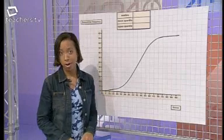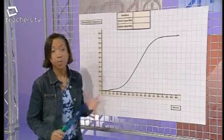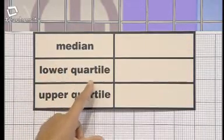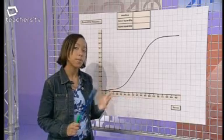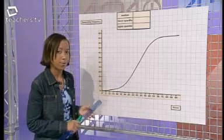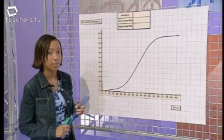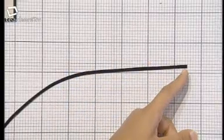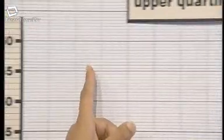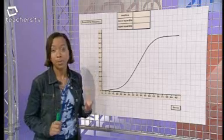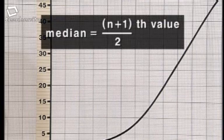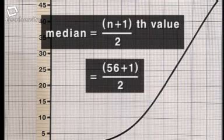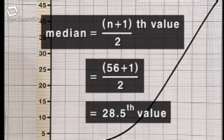This is Jamie's cumulative frequency graph. Three of the things you'll be asked to estimate from a graph like this are the median, the lower quartile, and the upper quartile. The median is the middle value of your data — in this example, it's the score which half of the competitors exceed and half don't reach. To estimate it from the graph, first find the total number of values, which is the highest value the curve reaches up the vertical axis — that's 56. Next, find the position of the middle value using the formula (n+1)/2, where n is 56. That gives 57 divided by 2, which is 28.5, so the median is the 28.5th value.